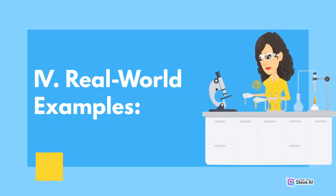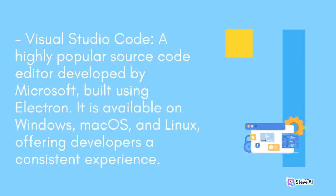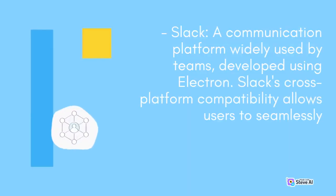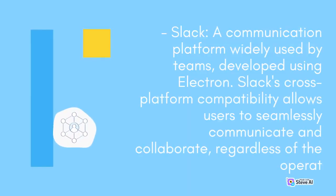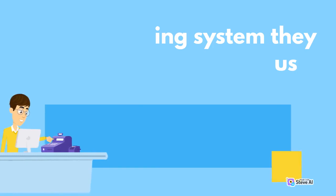Real-World Examples. Visual Studio Code: a highly popular source code editor developed by Microsoft, built using Electron. It is available on Windows, MacOS, and Linux, offering developers a consistent experience. Slack: a communication platform widely used by teams, also developed using Electron. Slack's cross-platform compatibility allows users to seamlessly communicate and collaborate, regardless of the operating system they use.